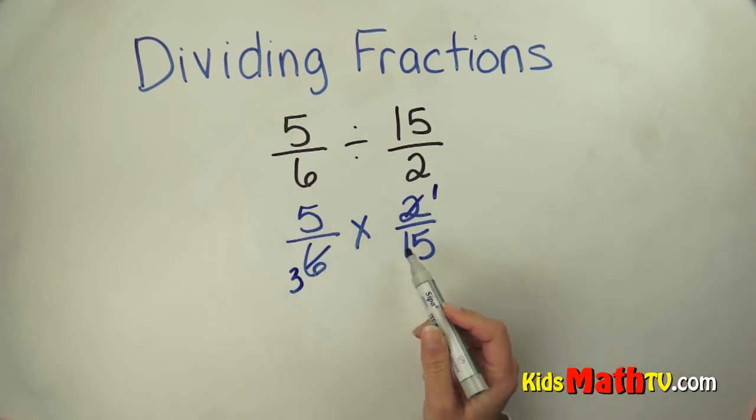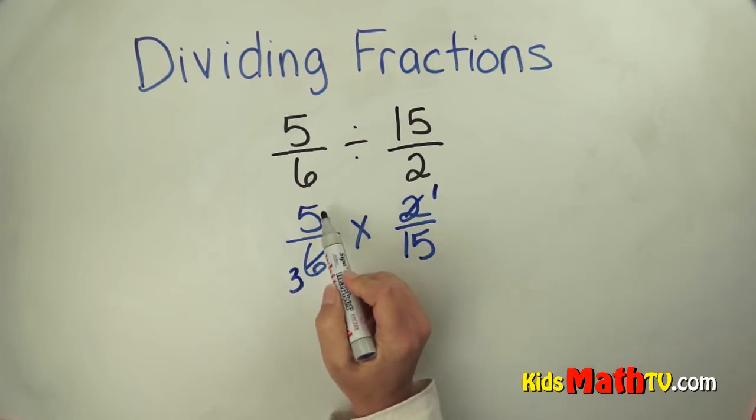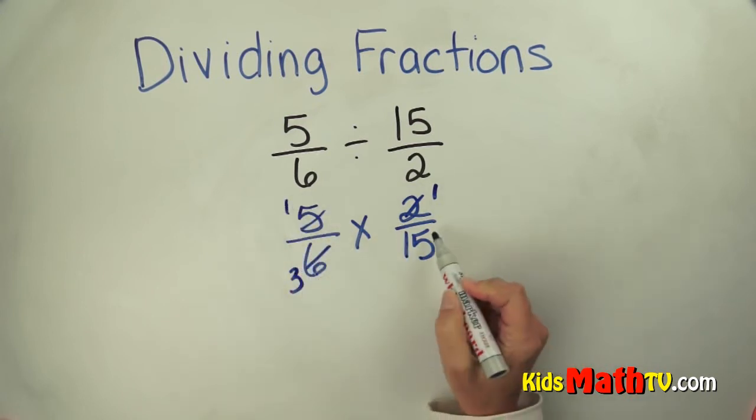I look to see if there's a number that will divide 5 and 15 evenly. There is. 5 will divide both. So 5 divided by 5 is 1. 15 divided by 5 is 3.